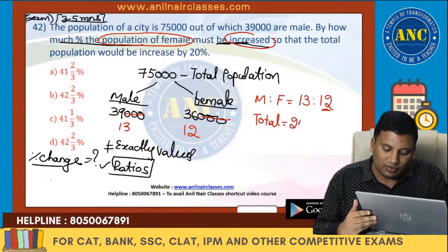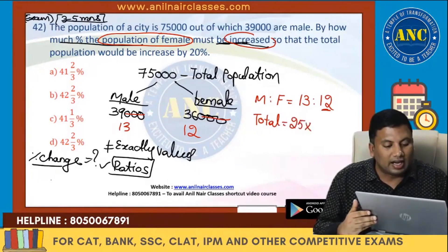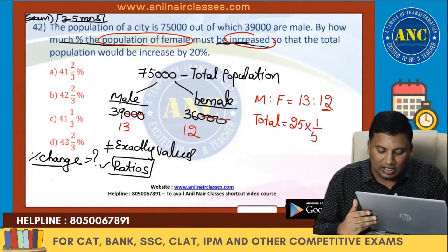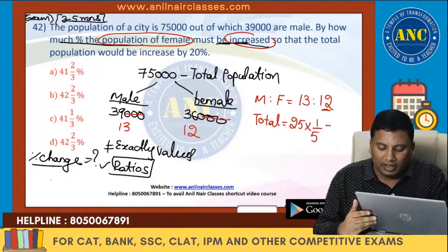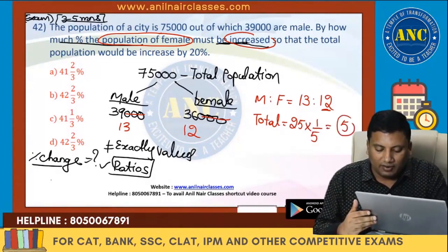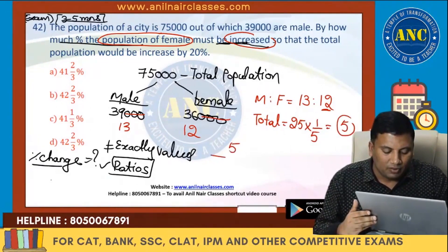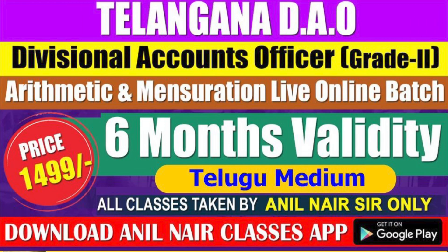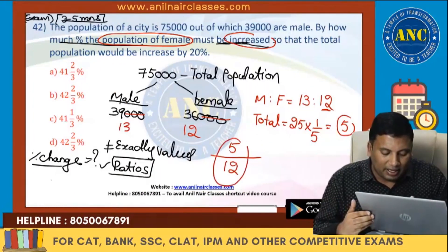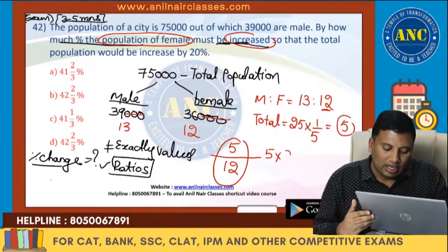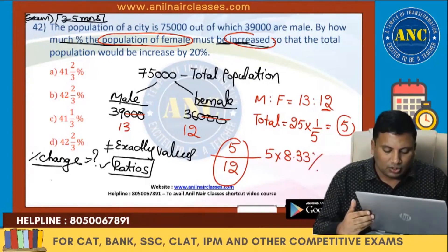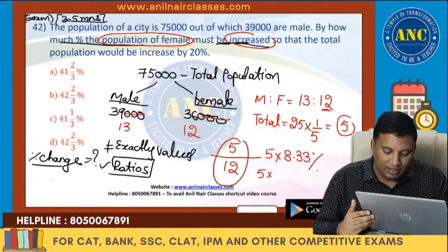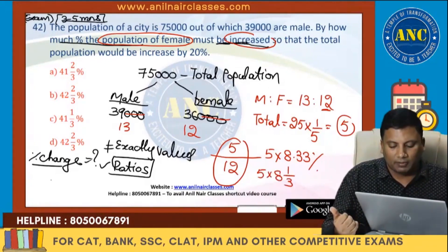13 plus 12 is 25, and it increases by 20 percent — that means 25 × (1/5) = 5. So there will be an increase of 5, due to the increase in female population. Therefore: 5/12 = 5 × (1/12) = 5 × 8.33 = 41⅔ percent.